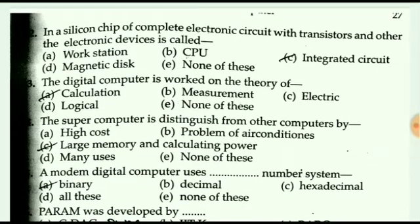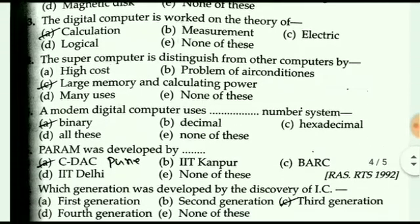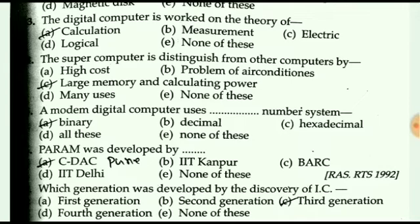Next question: the silicon chip of complete electronic circuits with transistors and other electronic devices is called what? The answer is integrated circuit. Next question: how is the digital computer distinguished from other computers? The answer is large memory and calculating power.